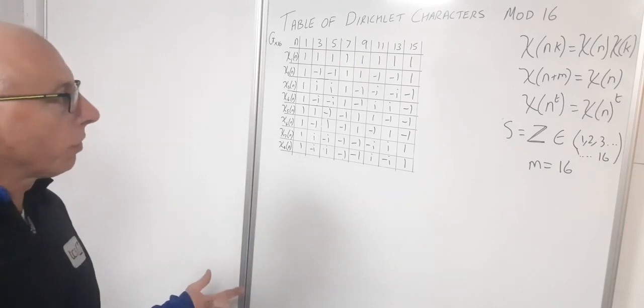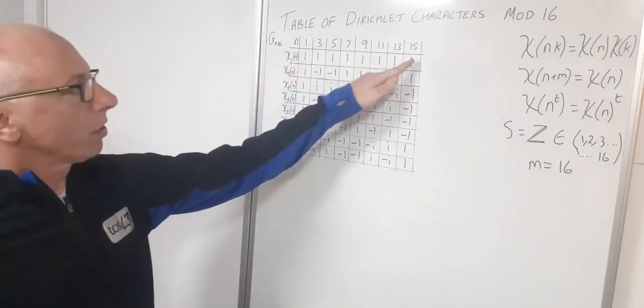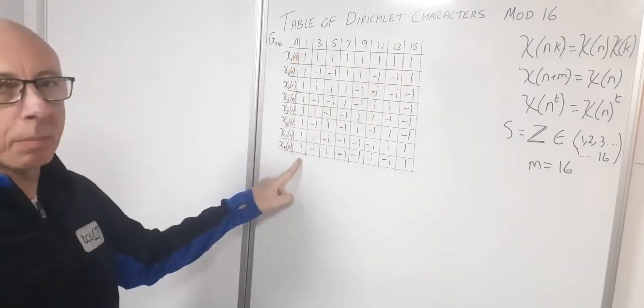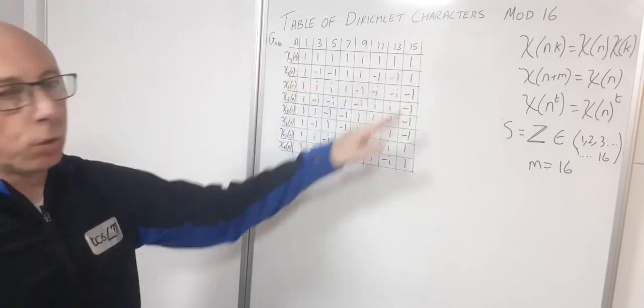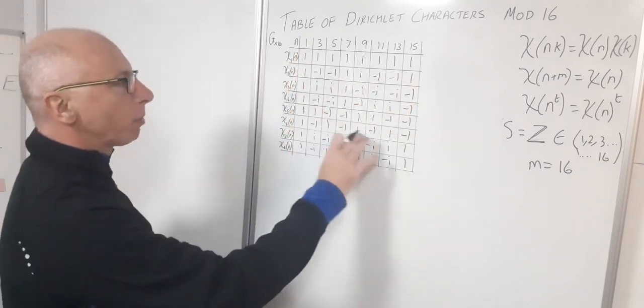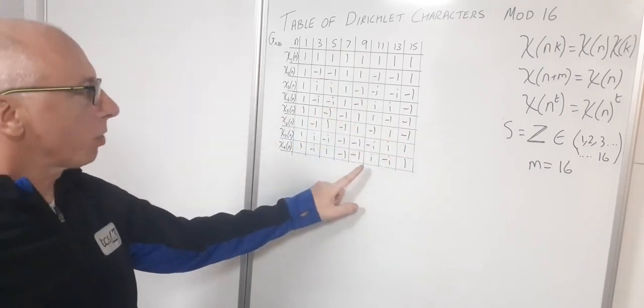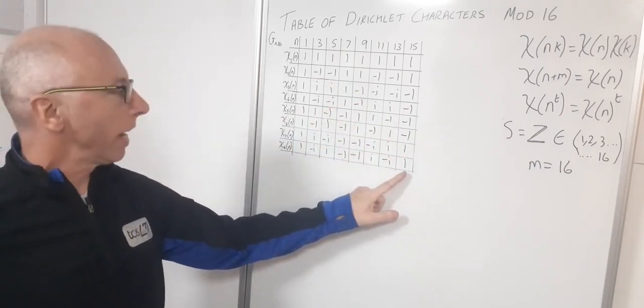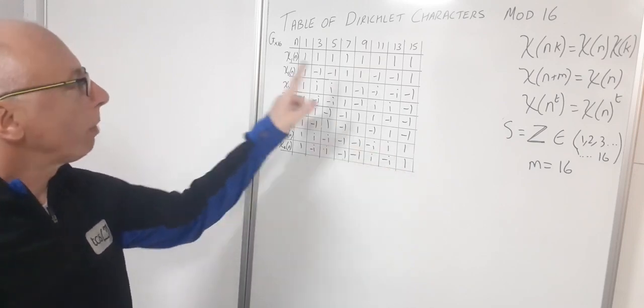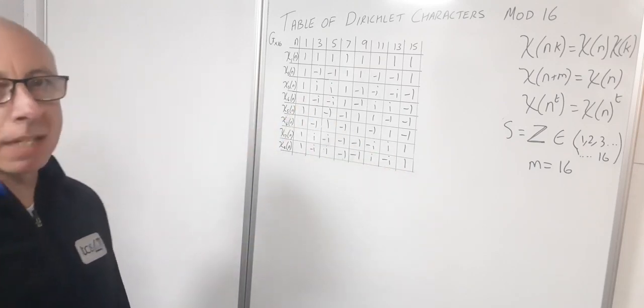We've got here along the top column and down this column, n equals 1, we'll notice they're all 1. But the rest of the table we've got four different values: minus 1, i, minus i, and positive 1, spread all around the table in various places.